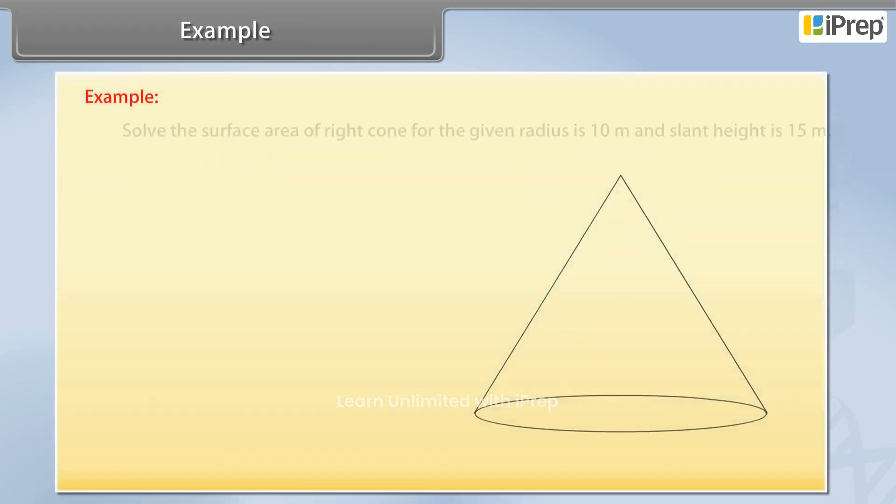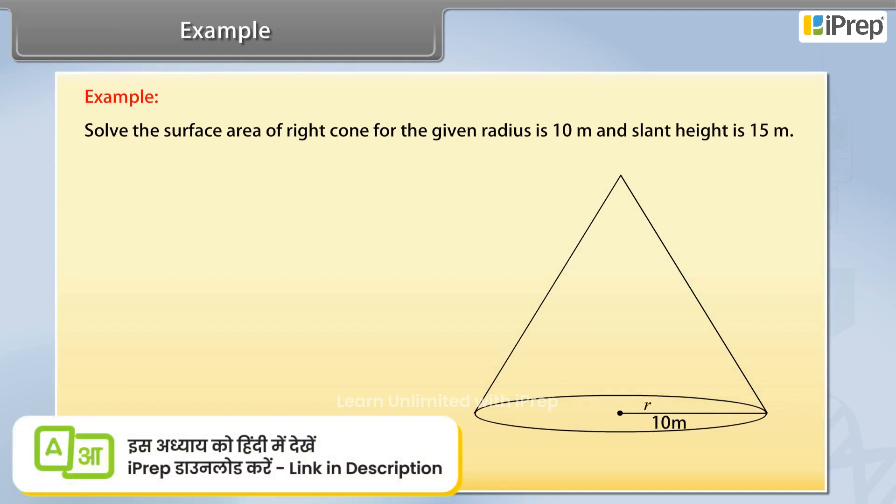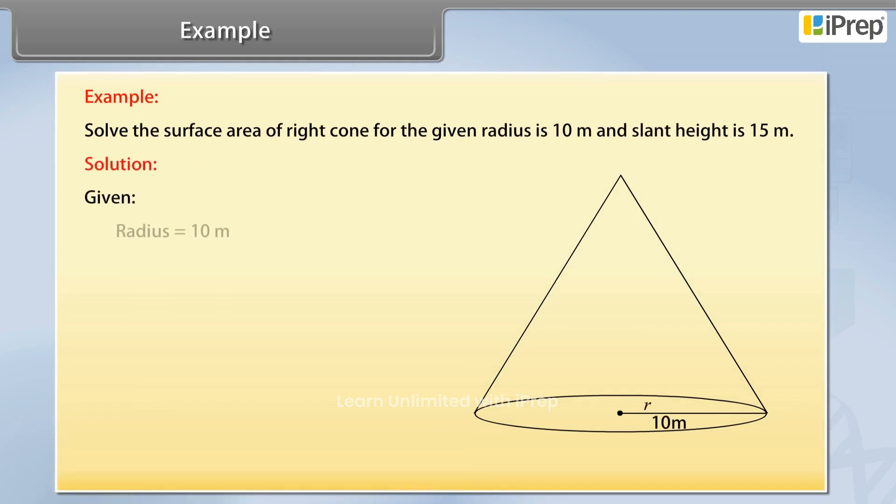Example: Solve the surface area of right circular cone for the given radius is 10 meter and slant height is 15 meter. Solution: Radius and slant height, which is 10 and 15 meter respectively, have been given. We have to find the surface area.